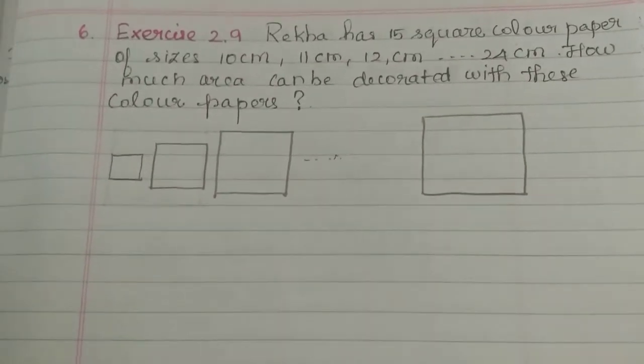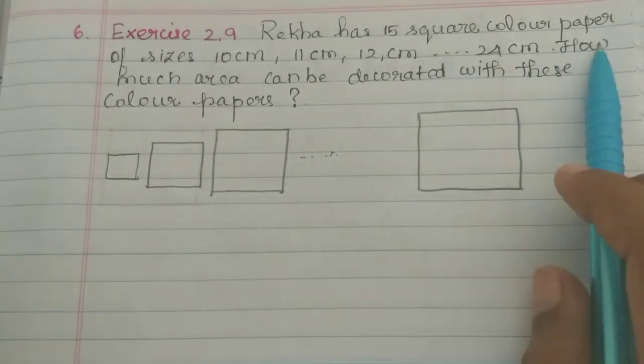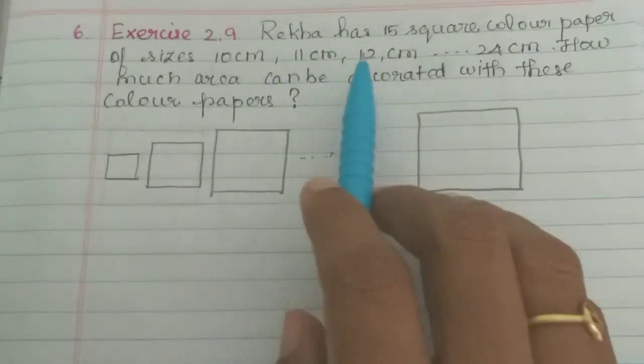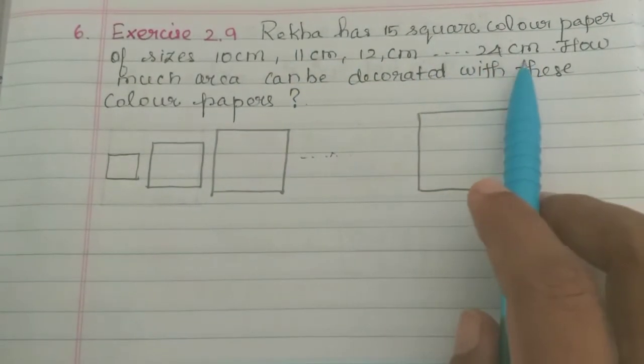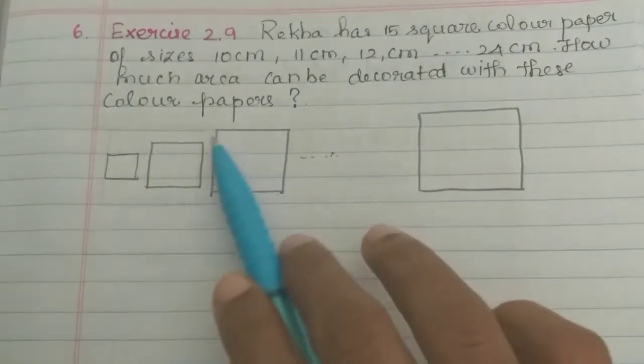Hi students, in the video we will see exercise 2.9, question 6. Rekha has 15 square color papers of sizes 10 cm, 11 cm, 12 cm, etc. up to 24 cm. How much area can be decorated with these color papers?